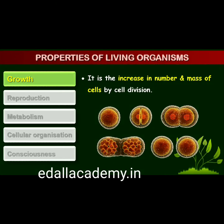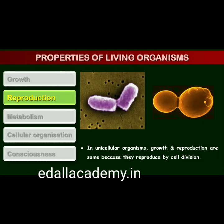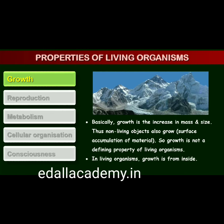All living organisms grow. Increase in mass and increase in number of individuals are twin characteristics of growth. A multicellular organism grows by cell division. In plants, this growth by cell division occurs continuously throughout their lifespan. In animals, this growth is seen only up to a certain age. However, cell division occurs in certain tissues to replace lost cells. Unicellular organisms grow by cell division, easily observed in vitro cultures by counting cells under the microscope. In majority of higher animals and plants, growth and reproduction are mutually exclusive events.